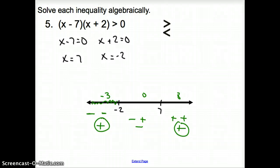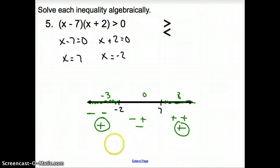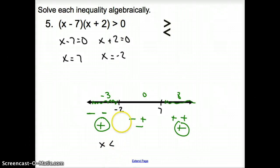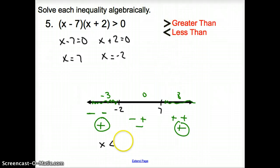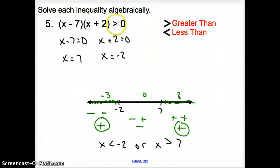So we are looking in those outer regions. We need to write an inequality statement. x is less than negative 2, or — because it's going in different directions — x is greater than 7. Notice our inequality matches the original inequality that we were given.